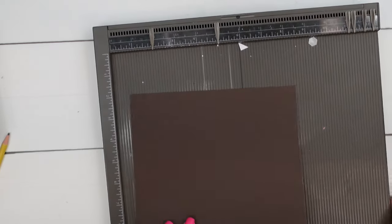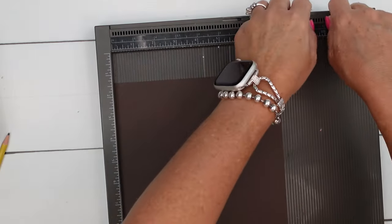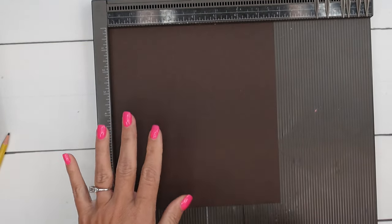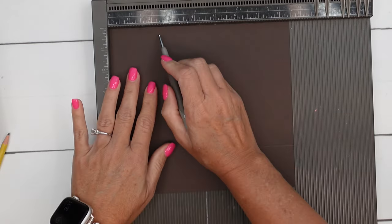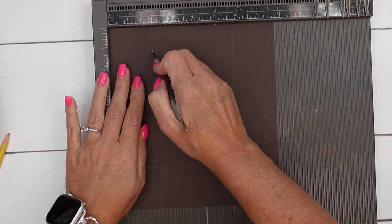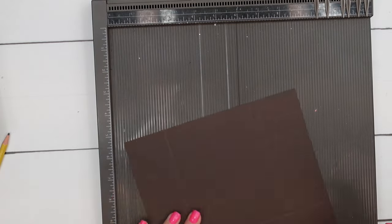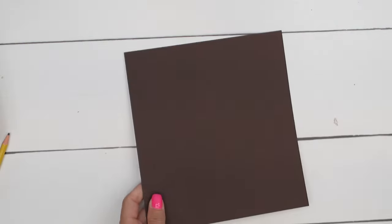I'm going to use early espresso cardstock for the bottom. And you're going to get your simply scored out. And we're just going to score two inches on all four sides. So one, two, three, four.